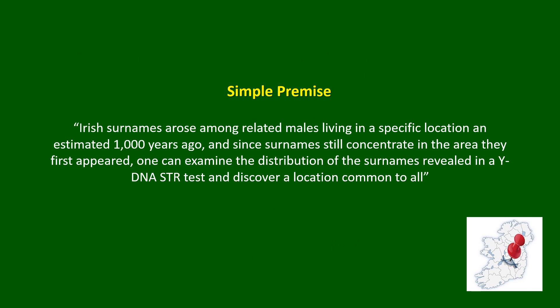There's a very simple premise: Irish surnames arose among related males living in a specific location an estimated 1000 years ago. Since surnames still concentrate in early census data in the area they first appeared, you can examine the distribution of the surnames you see in your YDNA STR results and discover a common location — that will be where your Irish ancestors originated.